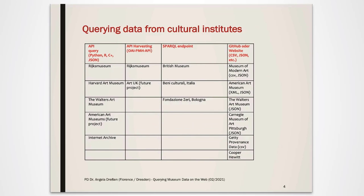Cultural institutions have chosen different ways to make their data publicly available. This table points only to a small selection of institutions. An API query is offered for example by the Harvard Art Museums, the Walters Art Museum, and the Rijks Museum. A SPARQL endpoint is offered by the Fondazione Zeri in Bologna, the Beniculturali in Italy, and Europeana. A variety of museums have chosen to make their datasets available on GitHub, like the Museum of Modern Art, the Getty, and the American Art Museum.